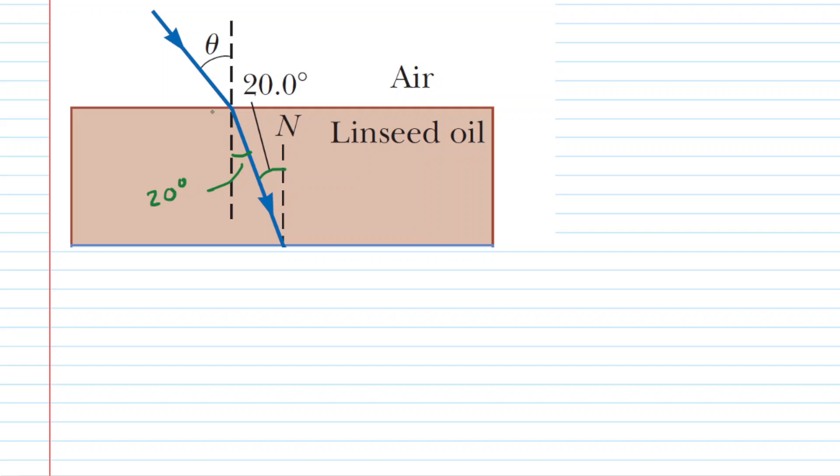Now after recognizing that, we can apply Snell's Law to the air linseed oil interface. Rather than saying n1 and theta1, n2 and theta2, we have replaced those subscripts with the actual materials in which the light is traveling. So we have air on the left side and oil on the right side.